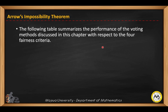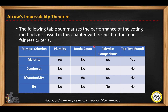The following table summarizes the performance of the voting methods discussed in this lesson with respect to the four fairness criteria. Considering plurality, Borda, pairwise comparisons, and top-two runoff: for the majority criterion, plurality, pairwise comparisons, and top-two runoff all satisfy it. For Condorcet, only pairwise comparisons satisfies it. For monotonicity, plurality, Borda count, and pairwise comparisons satisfy it. For IIA, none of these methods satisfies this particular criterion.